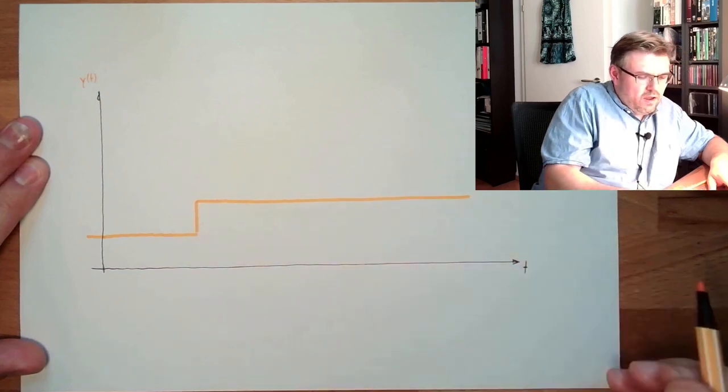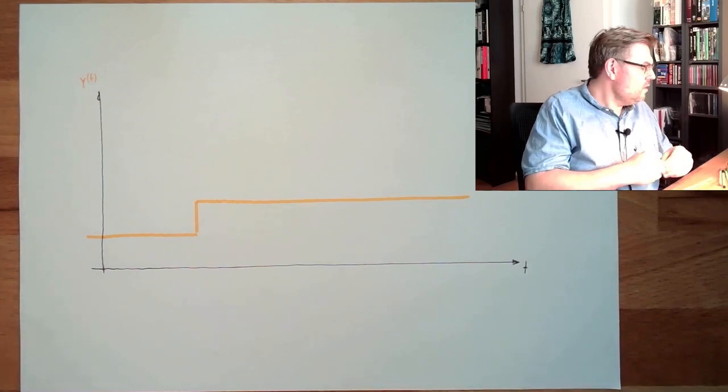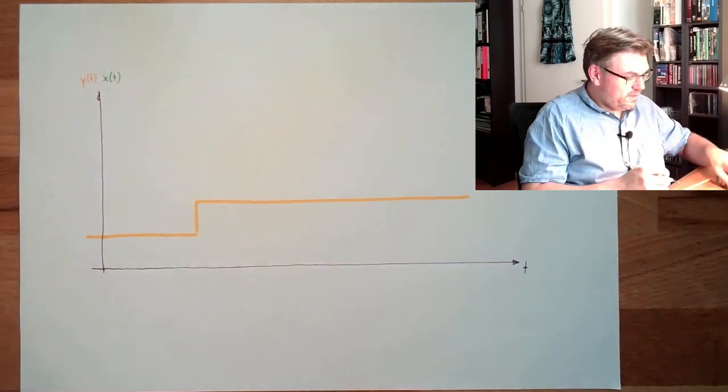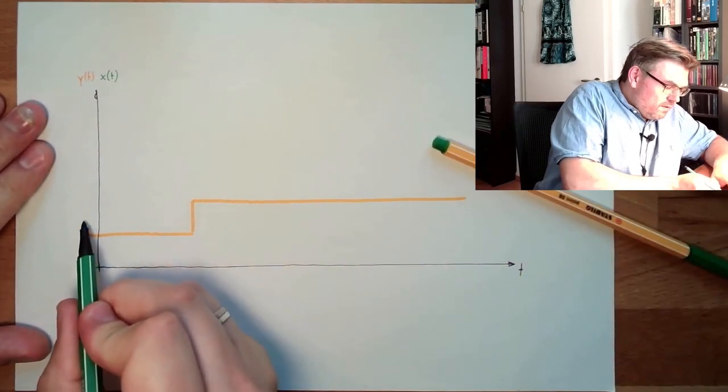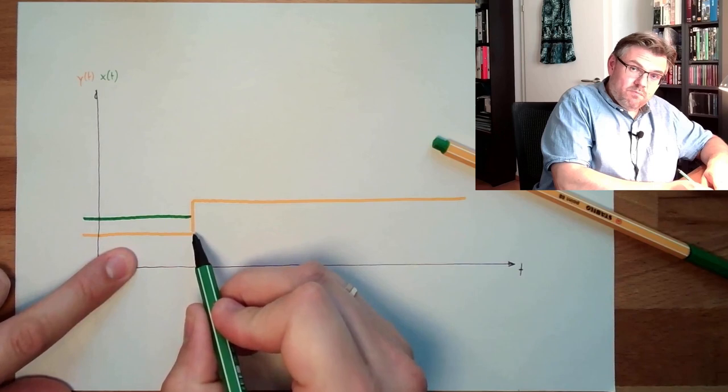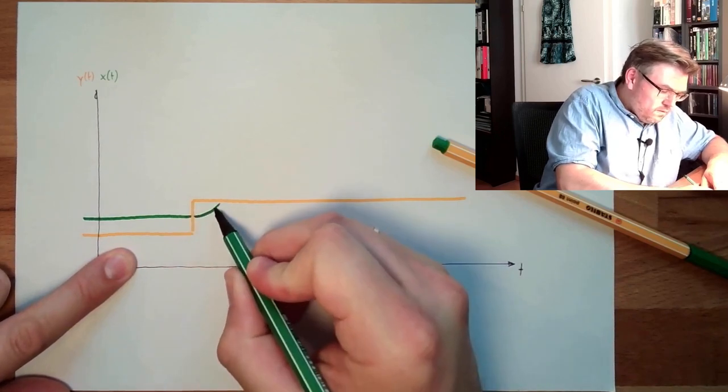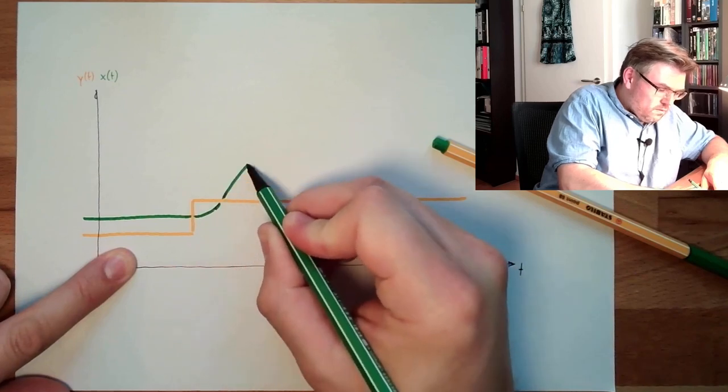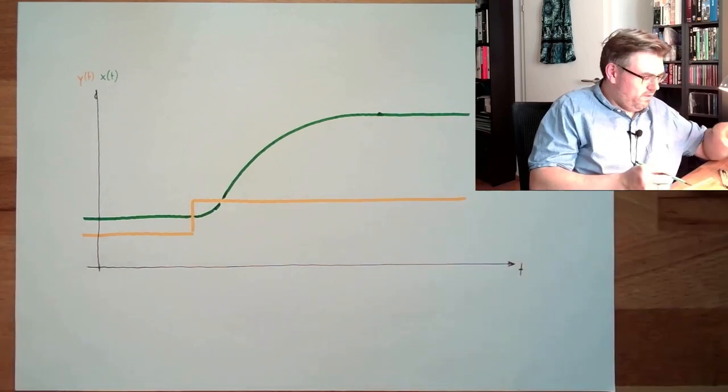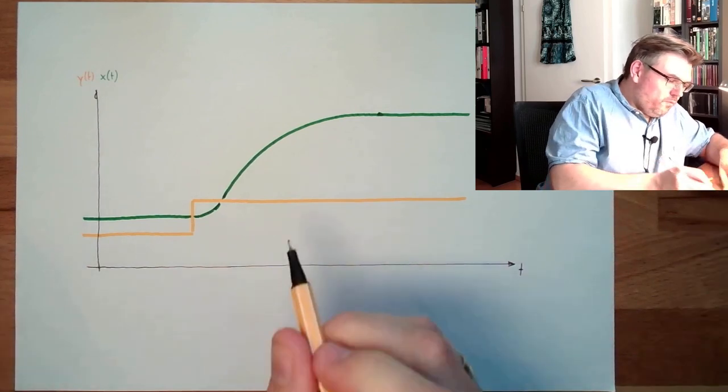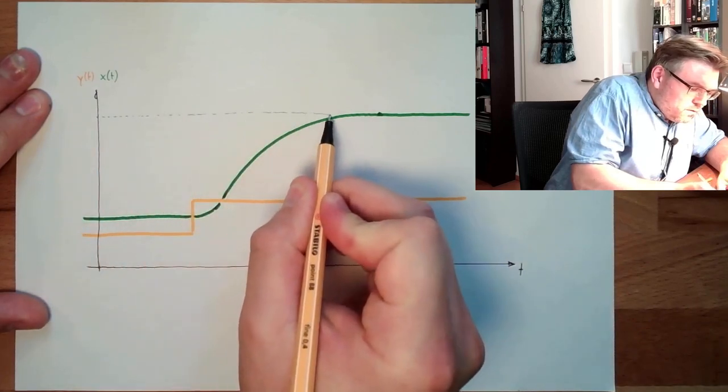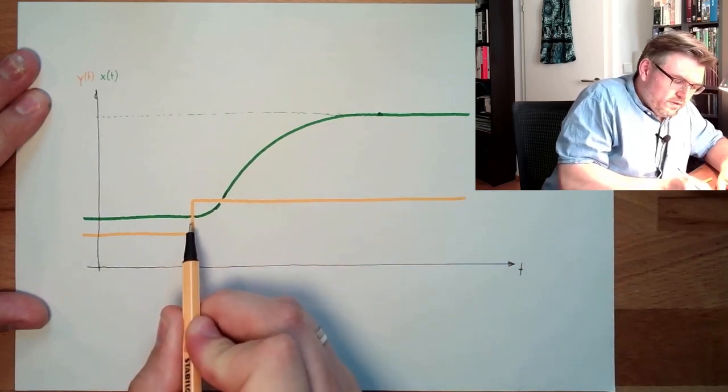This would be a reference variable jump. And what we are looking at is how the system, the controlled variable, is reacting. So usually it stays constant, and beginning at the jump at the input, we will start to do something. And probably it might look like that, that we then here reach a new stable value if it's a stable system.